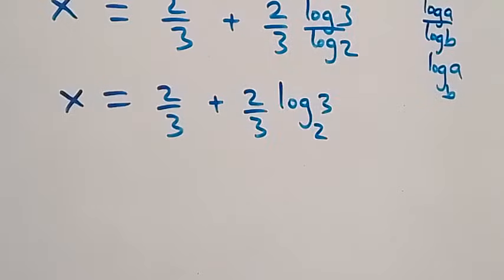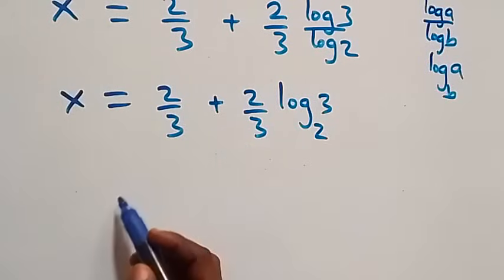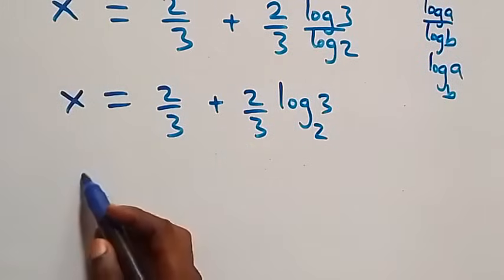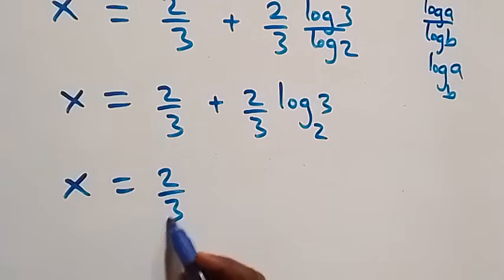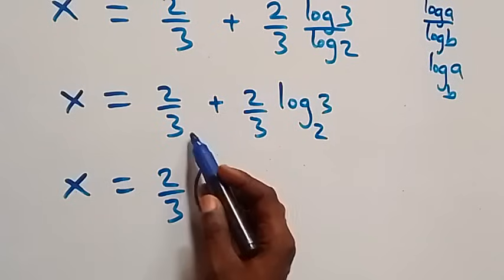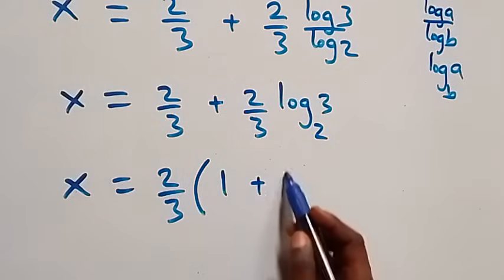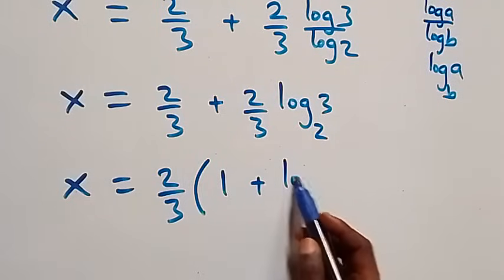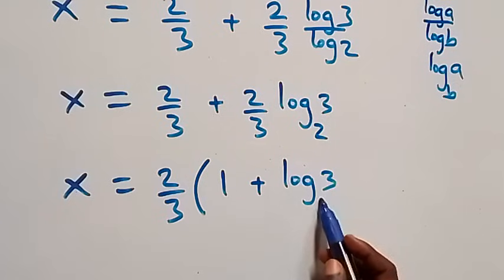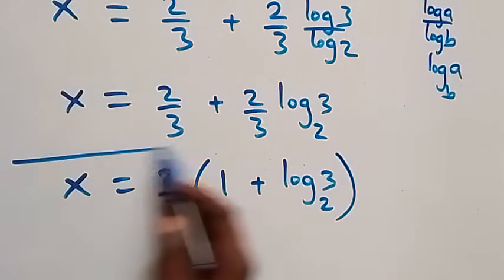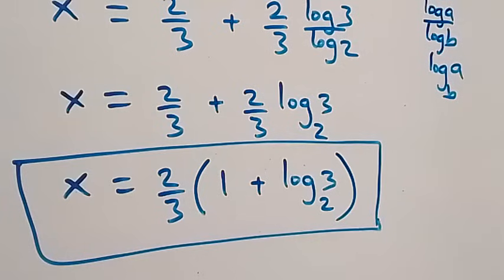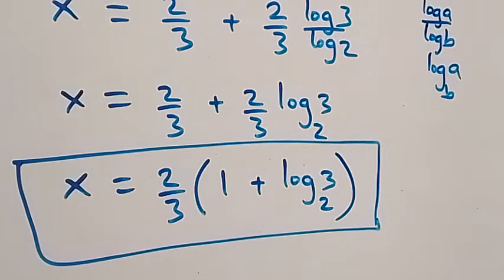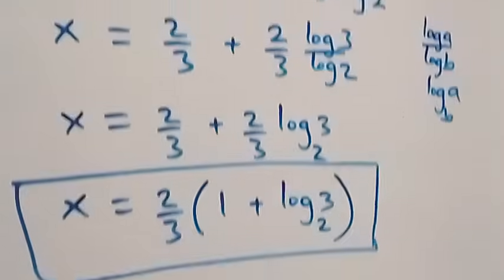Factoring out 2 over 3, we have x equals 2 over 3 times the bracket 1 plus log 3 base 2. So the value of x is 2 over 3 times (1 plus log 3 base 2). Now let's verify this satisfies the original equation.